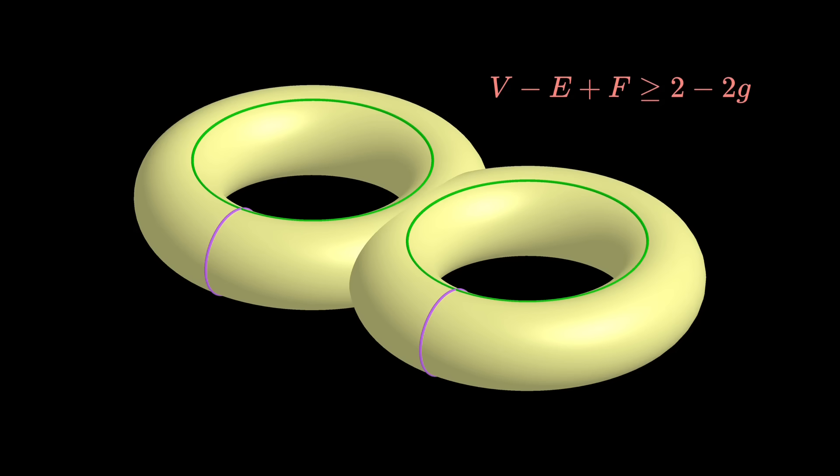Technically, when we have more holes, loops like this in the middle are still noncontractable, but they won't decrease the value of V minus E plus F, because closing this loop creates a new face. These two regions are now actually separated by this loop, so 2 minus 2G is really the lower bound.